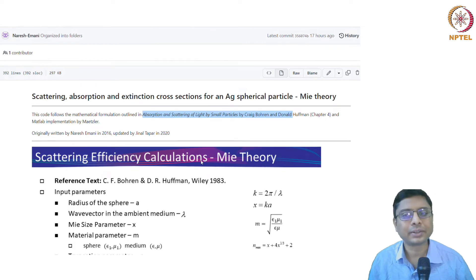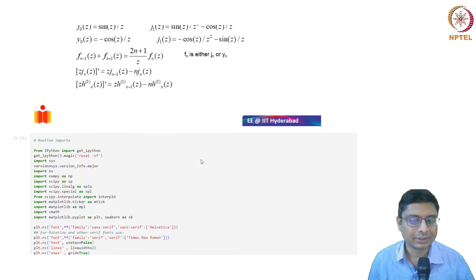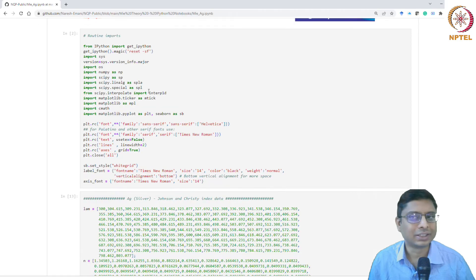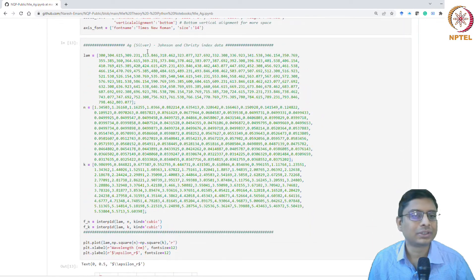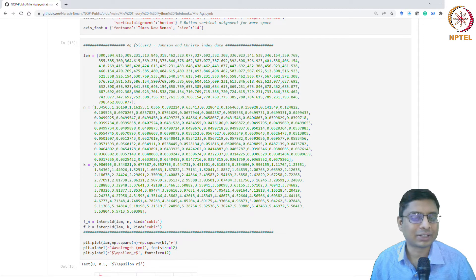Finally, here is the code. Some routine libraries are imported into the Python notebook, and then the metal function—in this case I'm calculating the scattering cross section for a metal. There's a lambda for various wavelengths. These are taken from this reference.